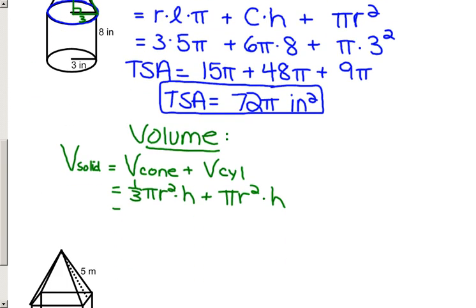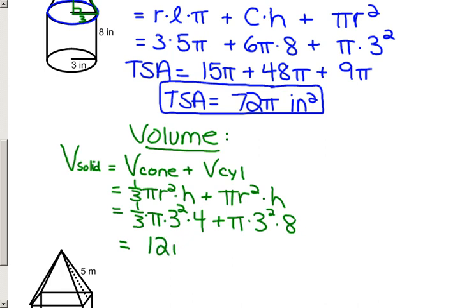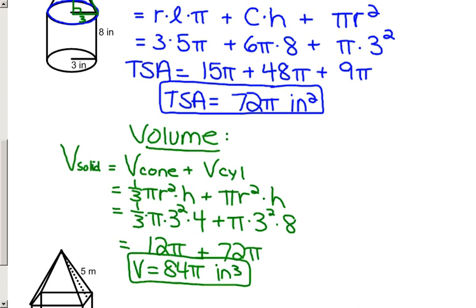Plugging that in, we will have one-third times pi, the radius of the cone is 3, the height of the cone is 4, plus pi times the radius squared 3, times the height of the cylinder which is 8. Simplifying, we will have one-third of 36 pi, which is 12 pi for the cone, plus 72 pi for the cylinder. The grand total volume is 72 pi plus 12 pi, which makes 84 pi inches cubed for the volume of that solid.